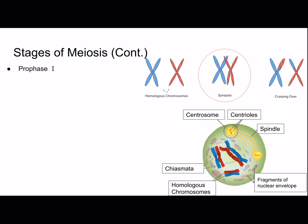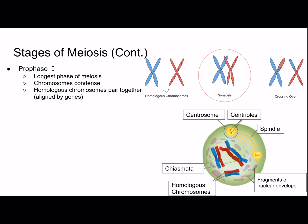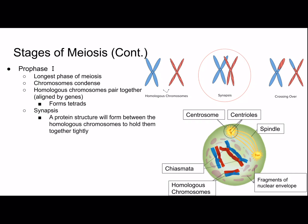Next we have prophase I, which is the longest phase of meiosis — a lot happens here. Chromosomes condense, and homologous chromosomes pair together, aligned by their genes, to form tetrads. Tetra means four, which is why it's called a tetrad when they come together. Synapsis is where a protein structure forms between the homologous chromosomes to hold them together tightly.